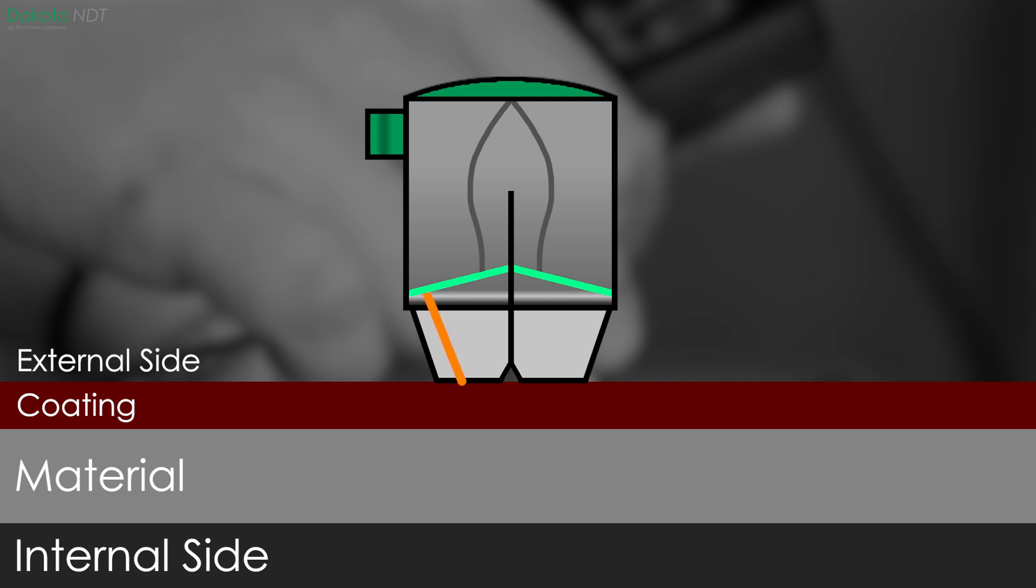The transducer detects both echoes and uses the speed of the pulse and the time between two echoes to calculate the thickness of the material, ignoring the coating above it and any other echo. This is called echo echo, or through paint.